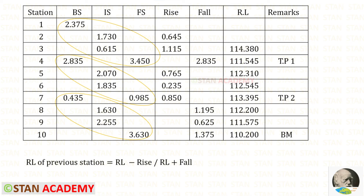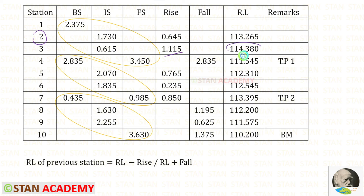For station 3, we have fall, so we add to get station 3's reduced level. For station 2, we have rise, so we subtract to get station 2's reduced level. For station 1, we also have rise, so we subtract to get station 1's reduced level.